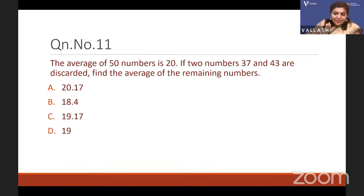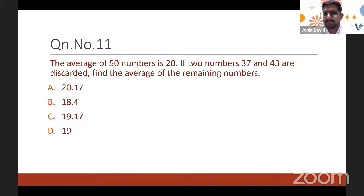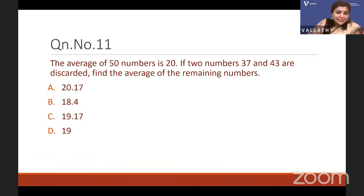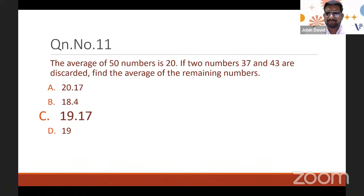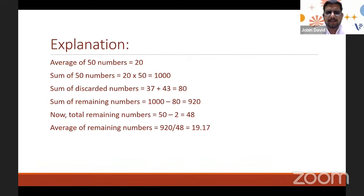Average of remaining 48 numbers = 920 ÷ 48 = 19.17. Agya got it correct first! Explanation: total sum is 1,000, subtract the two discarded numbers (80), leaving 920. Divide by 48 (not 50, since two numbers were removed): 920 ÷ 48 = 19.17.